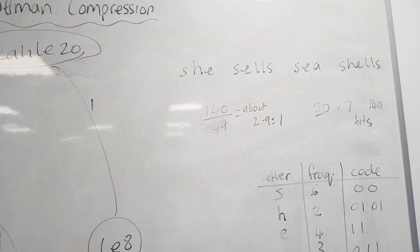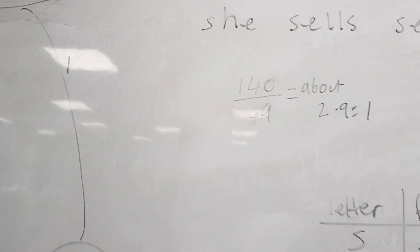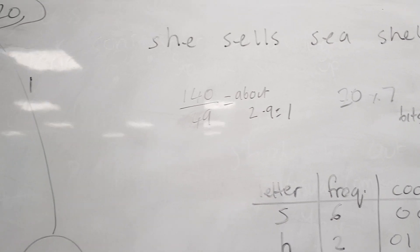So our original message was 140 bits and our compressed message is 49 bits, which is about a 2.9 to 1 compression ratio.